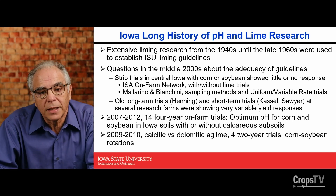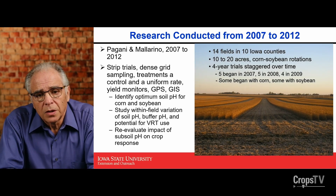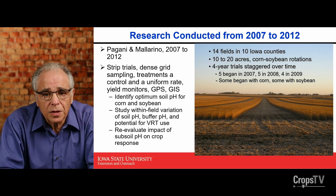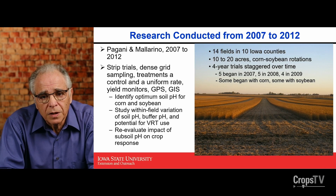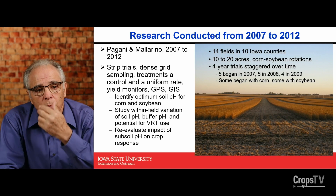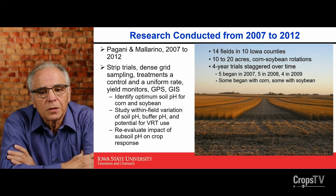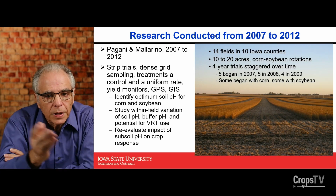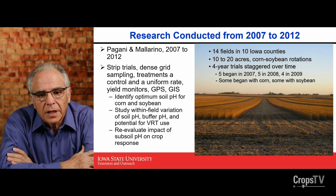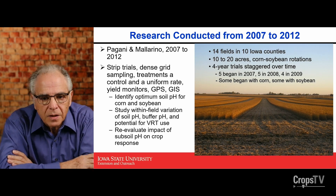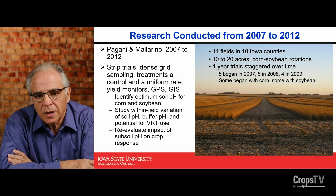I will not go into much detail because there is no time — this was a great and very expensive project. We worked for several years because we established five experiments in 2007, five in 2008, and four in 2009, each run for four years with a simple yes-or-no lime application. The main objective was to see what was the optimum pH. We used precision agriculture technologies and split those strips apart with about one-acre grid sampling.